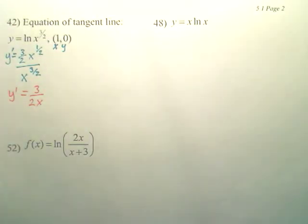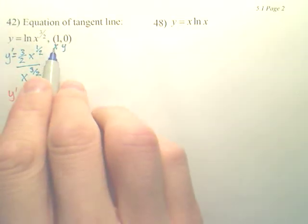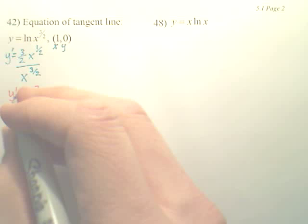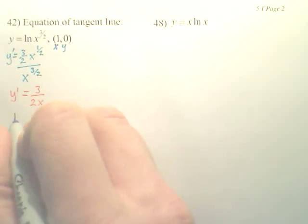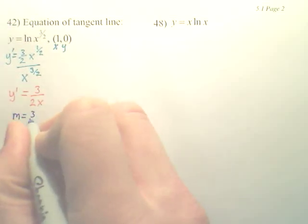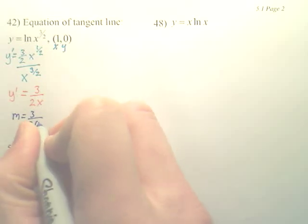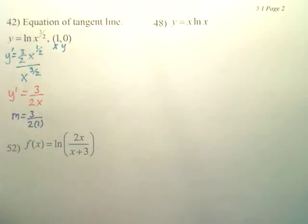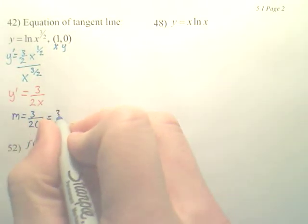Next, that's my derivative. I now want to find the slope, because I have x, y, I need the slope to make the equation. So, my slope is going to be 3 over 2 times 1. So, it looks like my slope is 3 over 2.